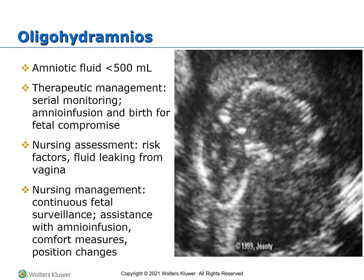Oligohydramnios is when amniotic fluid is less than 500 milliliters between 32 and 36 weeks. This arises from any condition that prevents the fetus from making urine or blocks it from going into the amniotic sac. They are at increased risk for cord compression and impaired fetal muscle and lung development. If fetal well-being is compromised, immediate birth is needed or amnioinfusion — where crystalline fluid is instilled to replace that fluid.